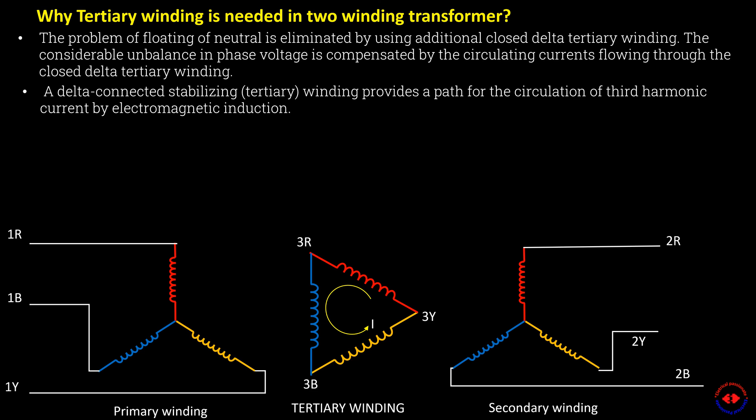Suppose the transformation ratio of the transformer is 1 is to 1. A load of 1 ampere is connected between secondary Y-phase and neutral. Load current of secondary Y-phase, 1 ampere will be equally shared by 1/3 per phase by delta winding flowing through closed delta path.